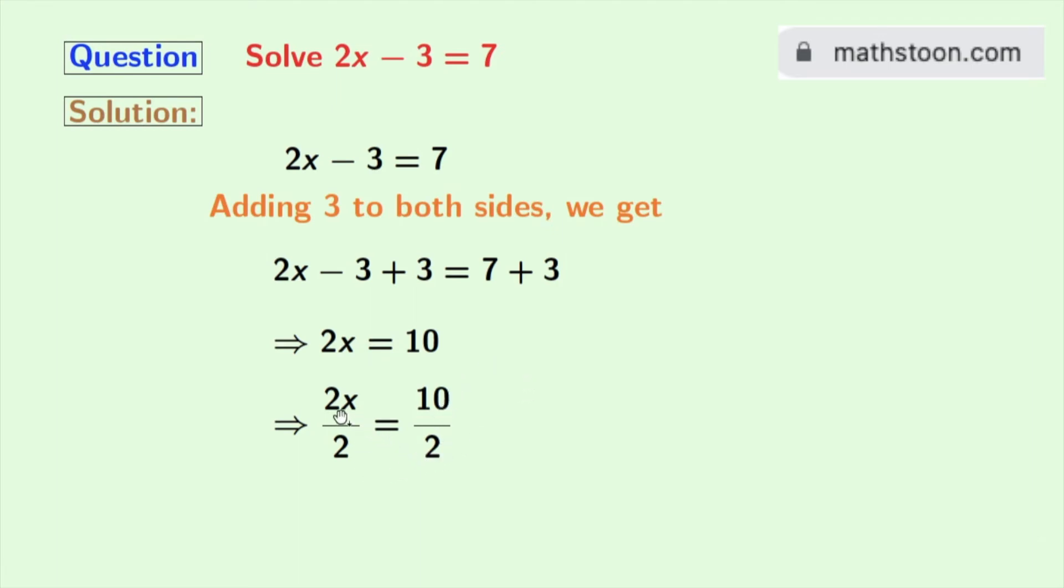In the left hand side 2 gets cancelled and we are left with x, and in the right hand side we have 10 by 2 which gives us 5. So x is equal to 5 is our final answer.